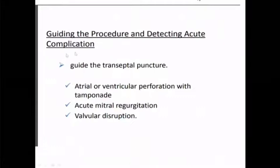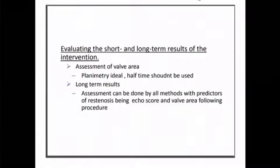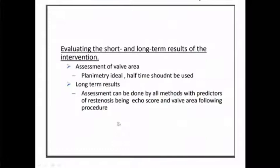Echo guidance during PBMV is critical, particularly for transseptal puncture. It can detect acute complications including atrial or ventricular perforation, tamponade, acute mitral regurgitation, and valve disruption. For post-procedure evaluation, planimetry is the ideal method; pressure half-time should not be used immediately after PBMV due to compliance changes. Long-term follow-up can use both pressure half-time and planimetry to assess restenosis.